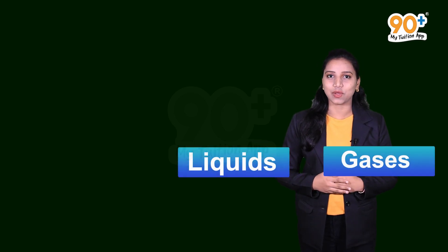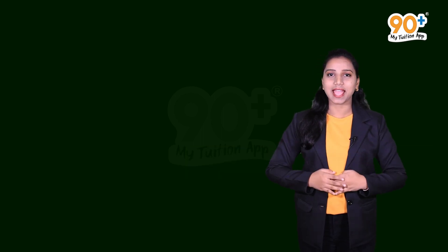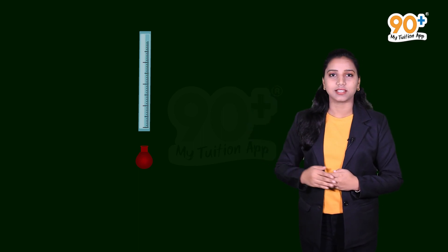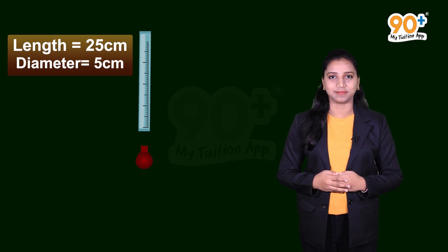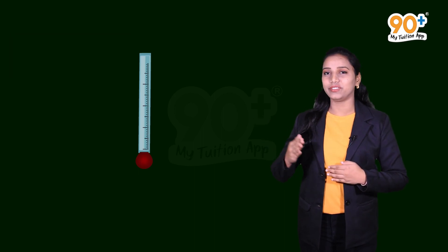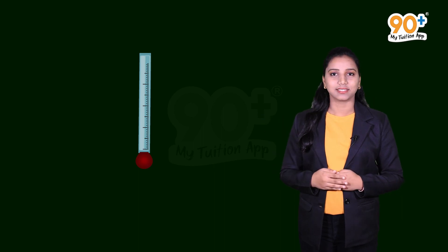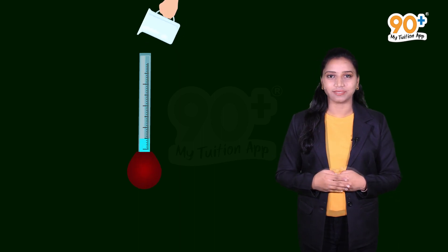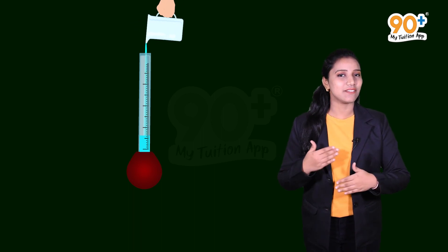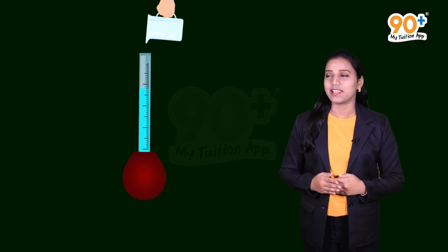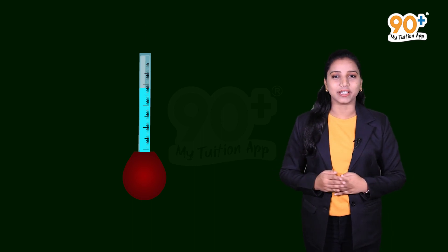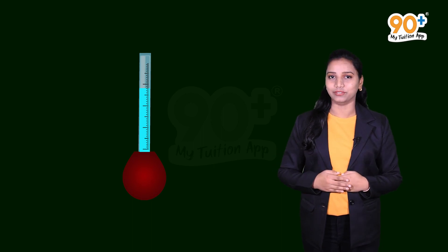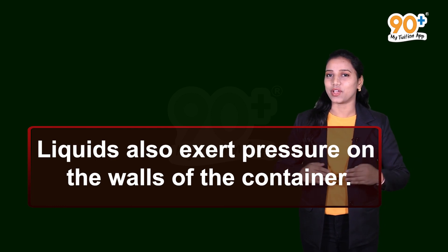Do liquids and gases also exert pressure? Let's do some activities. Take a long glass tube — 25 centimeters long and 5 centimeters in diameter — and stretch a balloon over one end. Keep it vertically and hold it in the middle. Pour some water into the tube — the balloon bulges. As more water is added, the balloon bulges out more and more. This bulging of the balloon indicates the pressure exerted by the water. Liquids also exert pressure on the walls of the container.